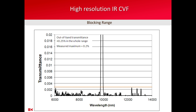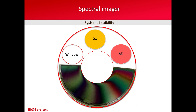We can see from here that the highest peaks of the blocked region reach the maximum of about 0.2% transmittance. In this slide, I show that a circular variable filter segment can be used not only with other segments making up a whole 360-degree filter, but it can be used with other types of filters which are not the circular variable filters.